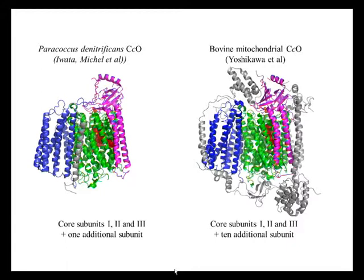If we look at a bacterial enzyme whose crystal structure has been solved — this one is from Paracoccus denitrificans — it's composed of three large subunits, here colour-coded in blue, green, and purple, with one very small transmembrane helical subunit. The mitochondrial enzyme has the same three key subunits, in this case with ten other subunits around it. But this core structure of the three subunits is common to all of these oxidases.